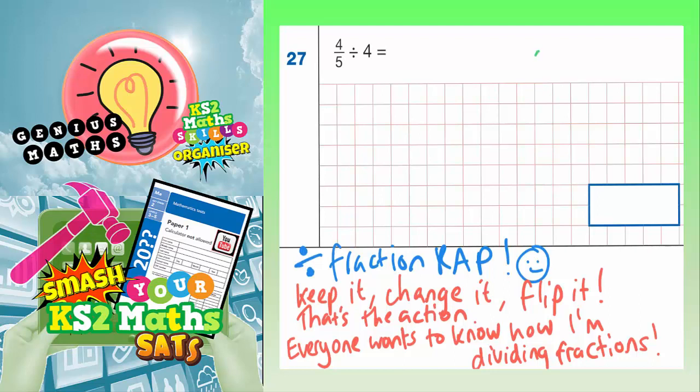We've already said when you multiply fractions, you do top times top and you do bottom times bottom. And you can actually use that to help you here. You can change a dividing fraction question into a multiplying fraction question. But the first thing we need to do is change this 4 into an actual fraction.